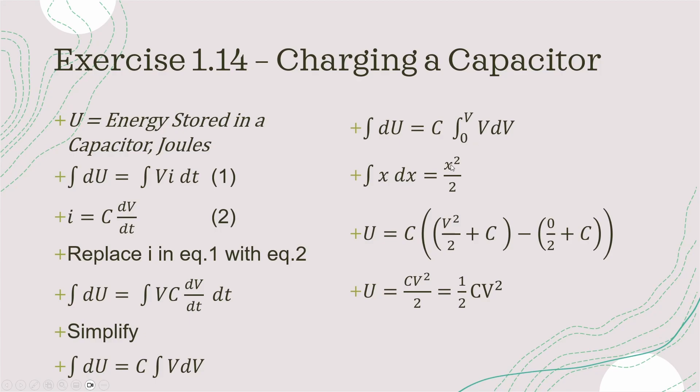So, we minus one from the other to solve the integral. So, we replace the variable with the upper limit, so that's V squared divided by 2 plus C, which is from here, and then minus the lower limit. So, you place that into the x here, so that's zero squared divided by 2, so we've got minus here, minus zero squared divided by 2 plus C.